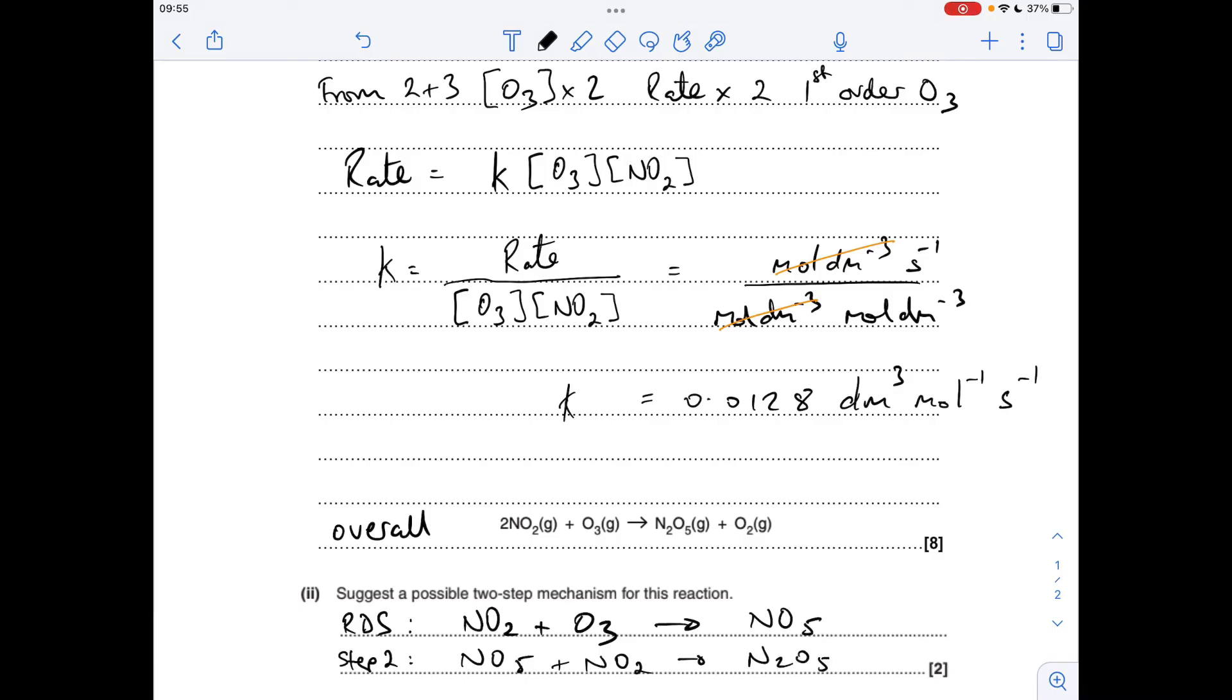So let's put them in, N2O5 plus O2, and then add the equations together. NO5s will cancel and you're left with two NO2s plus O3 gives N2O5 and O2. So that is valid as well.